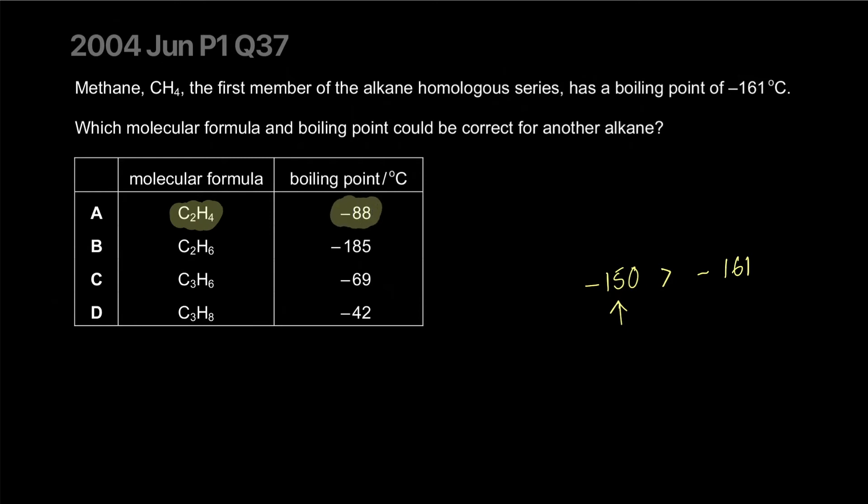Taking a look at C2H4, it looks higher definitely. C2H6 is actually lower, that's out. C3H6 is also higher. C3H8 is also higher in boiling point. But they're strictly talking about alkanes. C3H8 is an alkane. C3H6 is not an alkane. D is our answer.